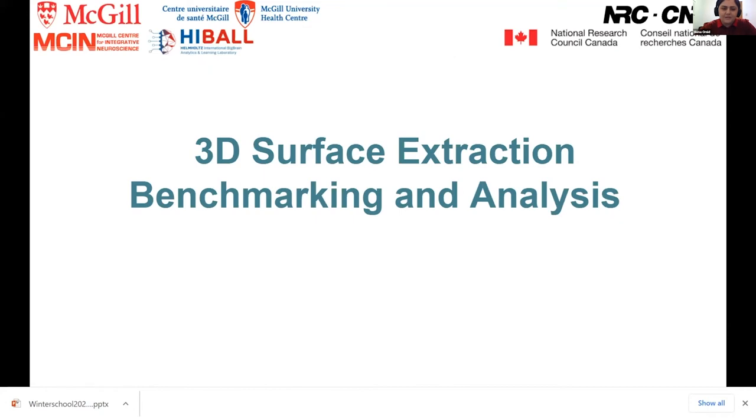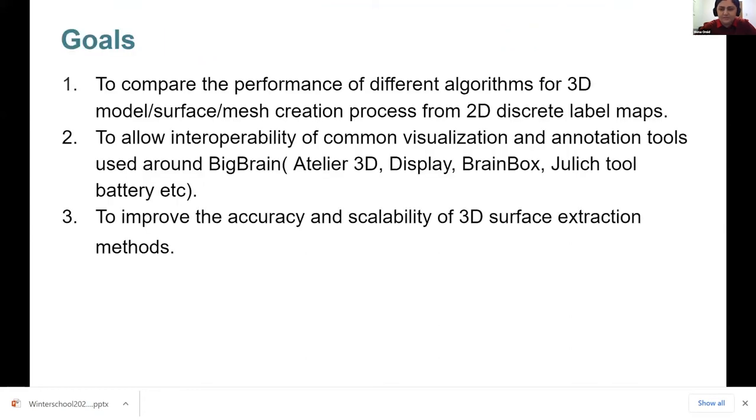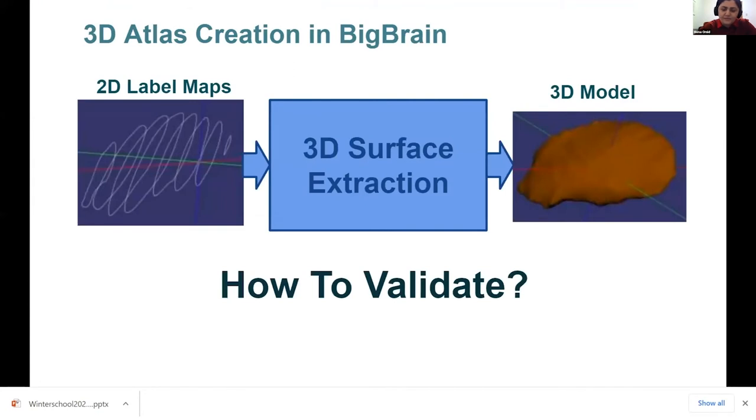Hi, everyone. Today I will talk about 3D surface extraction benchmarking and analysis project that we have started working in our team. BigBrain is publicly available and can be used as a reference map to create 3D atlases of small anatomical structures of human brain for detailed observation. These 3D atlases can be mapped to other spaces and be employed as templates for in-vivo MRI analysis. For visualization, registration, and analysis, it is often required to extract 3D surfaces from 2D discrete label maps, which mark anatomical structures in the data.